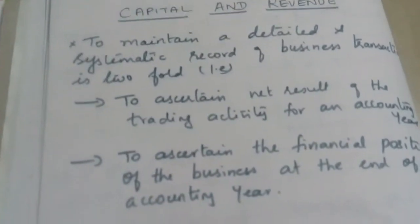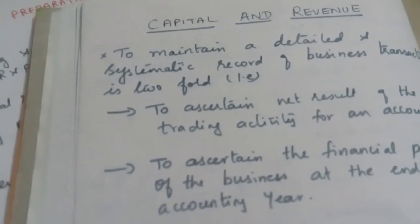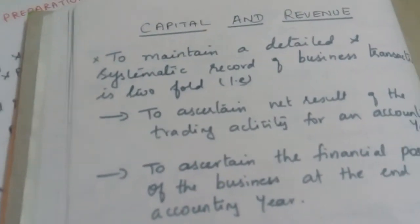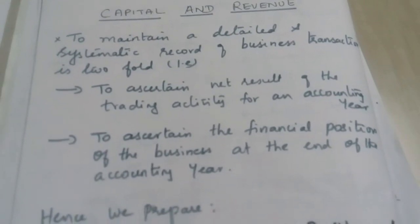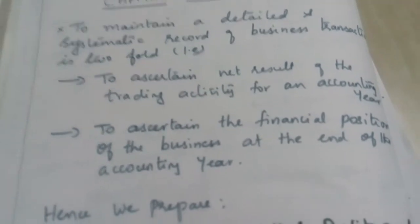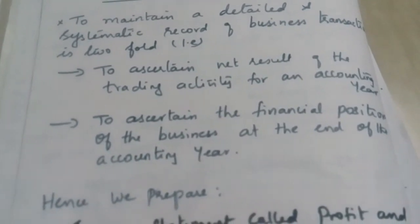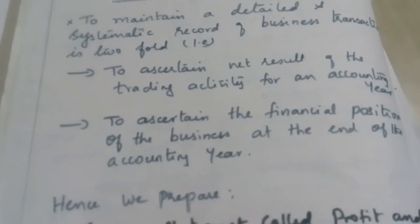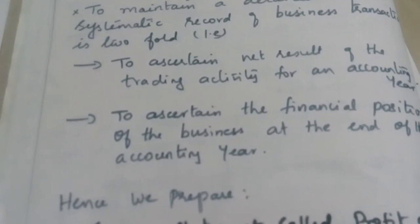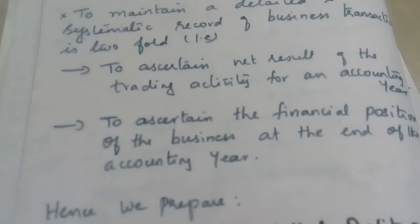I have been telling that capital receipts and capital expenditure should be excluded. Let me explain the difference between capital and revenue expenditure and receipts. In order to maintain a detailed and systematic record of business transactions, we need to achieve two things: first, to ascertain the net result of the trading activity of an accounting year; and second, to ascertain the financial position of the business at the end of the accounting year. This is mandatory for both trading organizations and not-for-profit organizations.